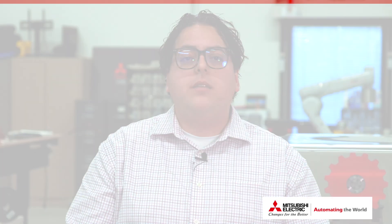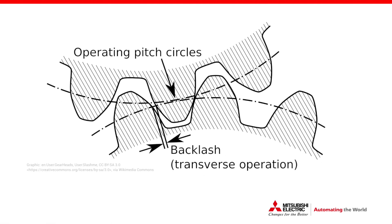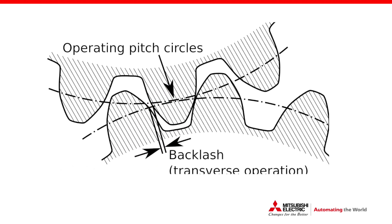But because those clearances exist, when the gearbox changes direction, the output shaft will remain stationary for a brief moment, causing the input and output to be offset by the same amount as that clearance.